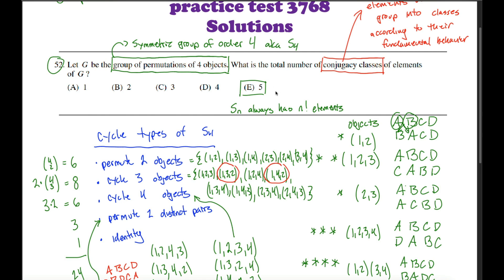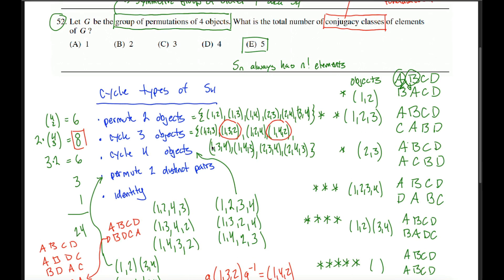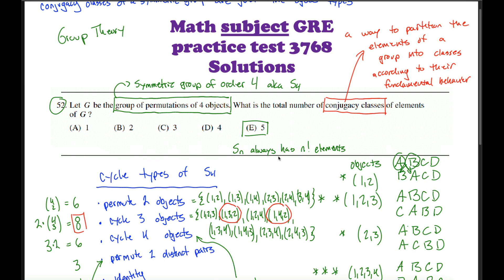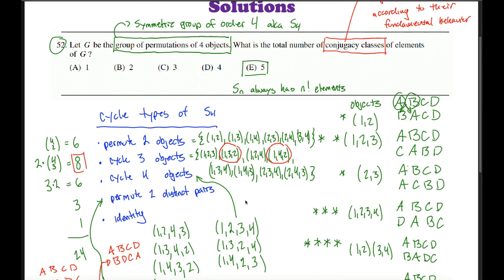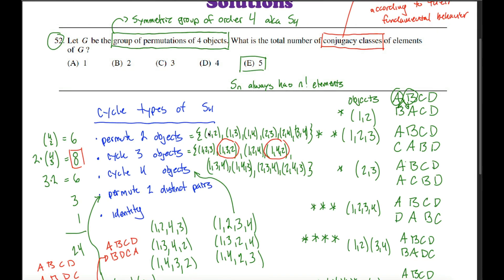So if you can see that conjugating K-cycles gives you K-cycles, you can conclude that the conjugacy classes in a symmetric group are just the different cycle types. For S4 there are five cycle types, so five conjugacy classes. The maximum number of elements in a class is eight (the three-cycles), and no conjugacy class has exactly four elements — they have 6, 8, 6, 3, and 1. The answer to this problem is five.